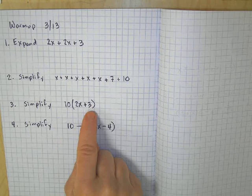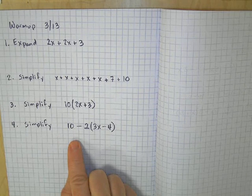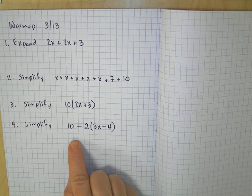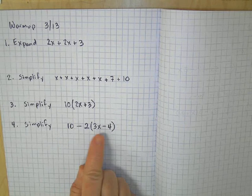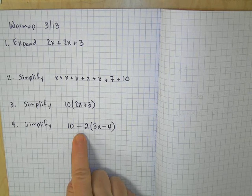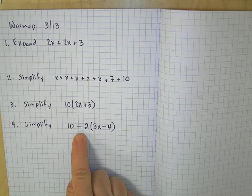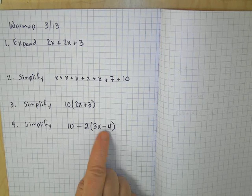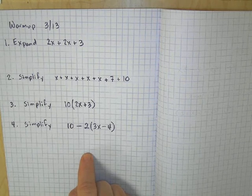The last problem kind of puts these ideas together. You need to first rewrite it, because we have subtraction signs. So rewrite this one, and then parse. Make sure you parse this one. And then you're going to distribute, and then you'll simplify by combining like terms.